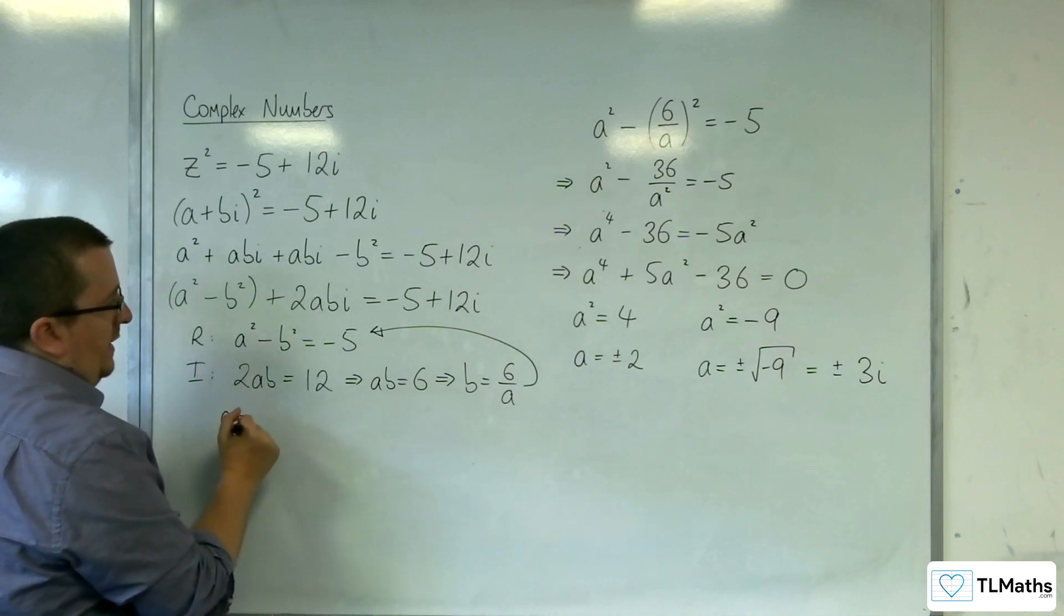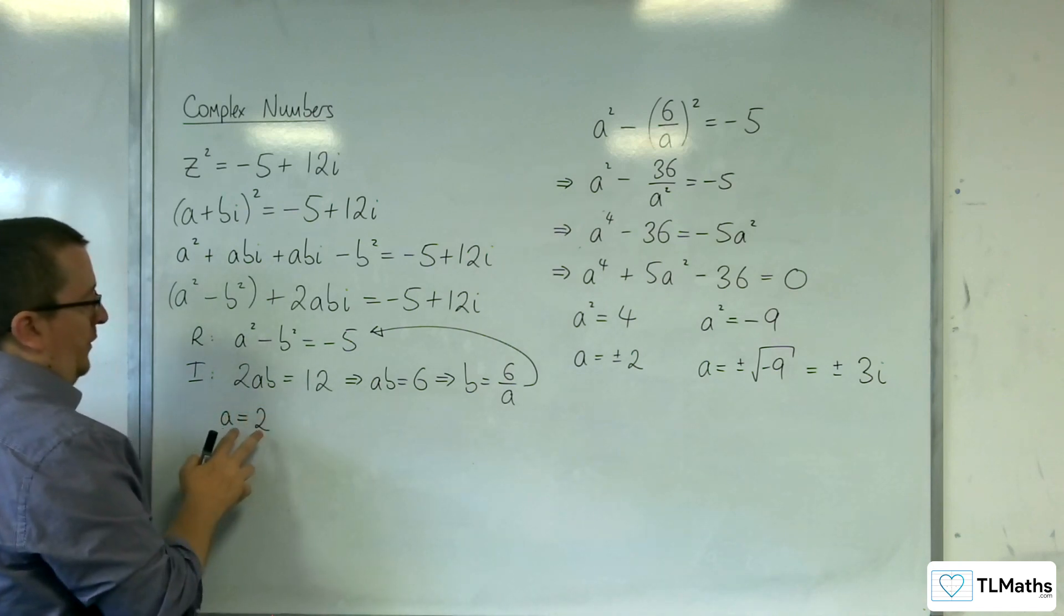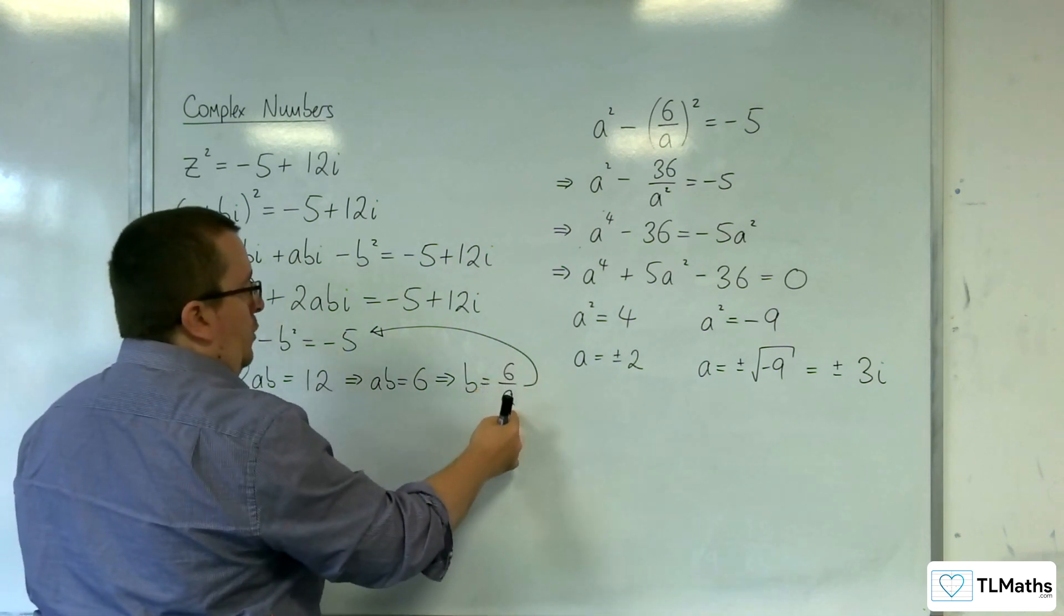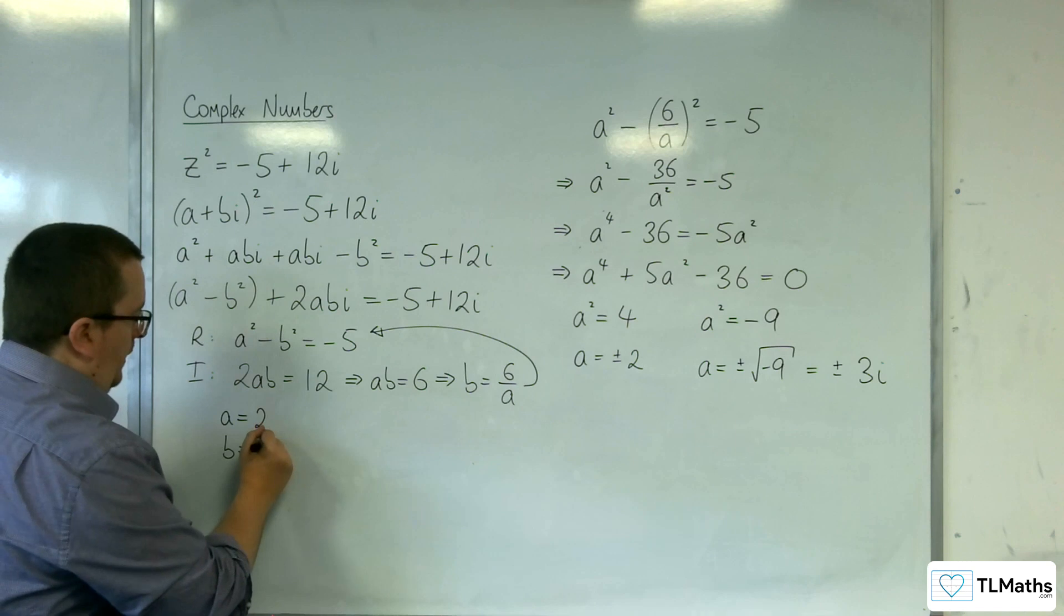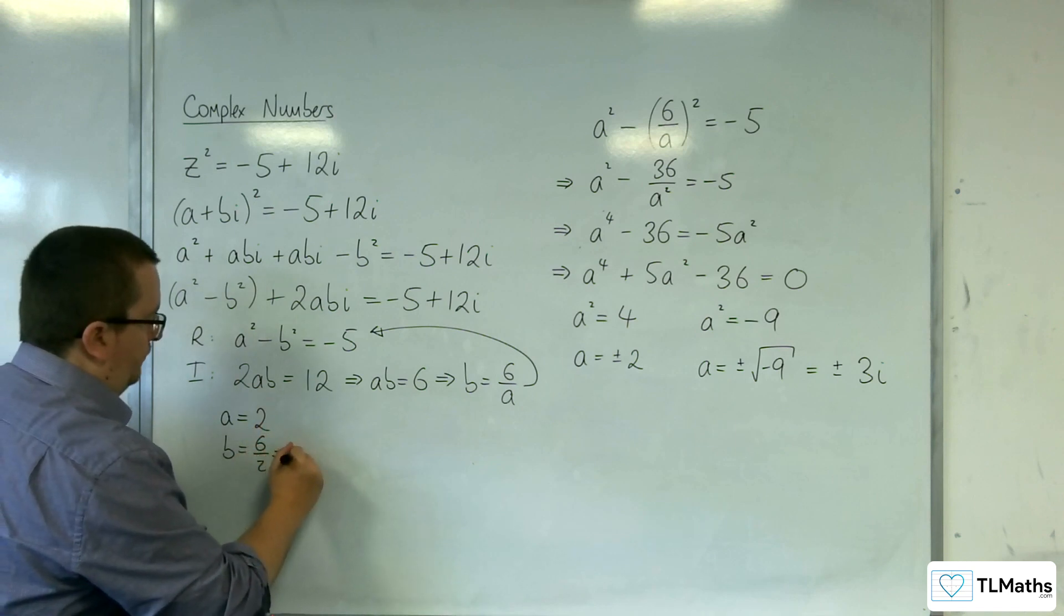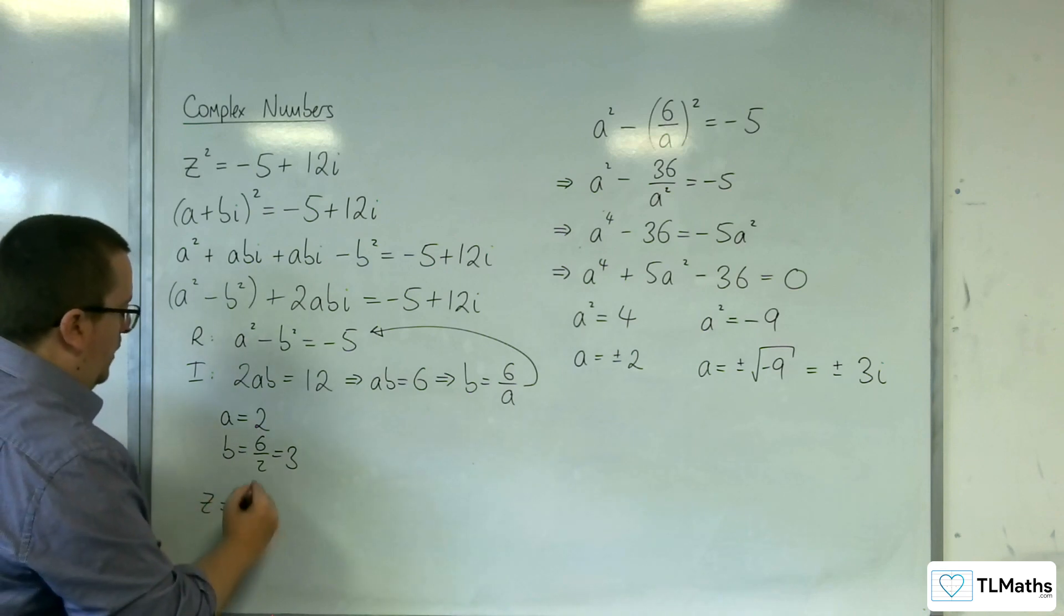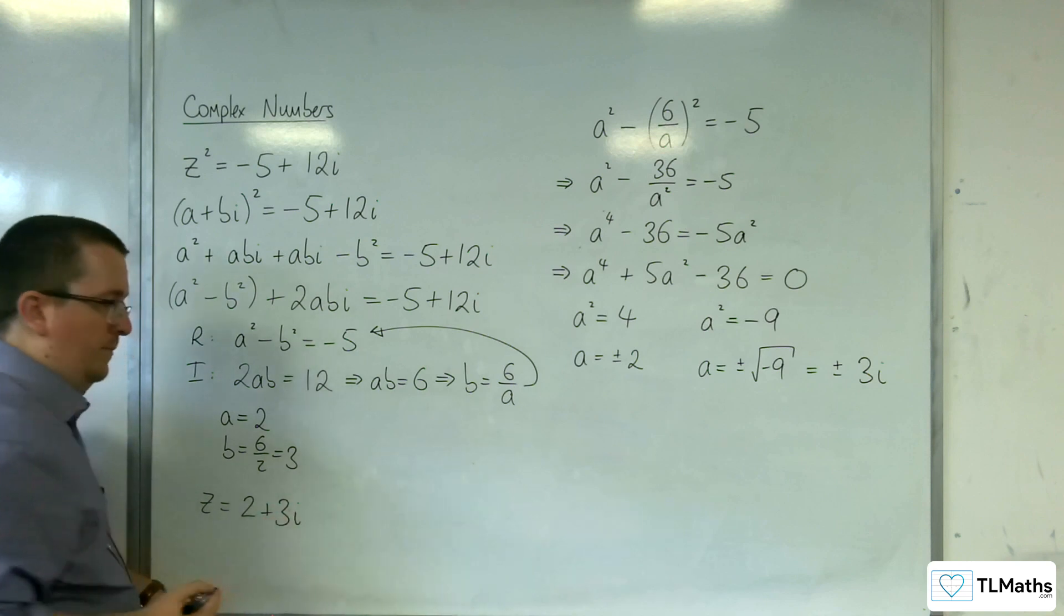So, let's have a look at all of our cases. So, if a is equal to 2, then b is equal to 6 over 2, which is, of course, 3. So, we've got one possibility for z, which is 2+3i.